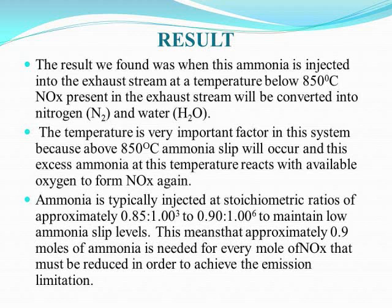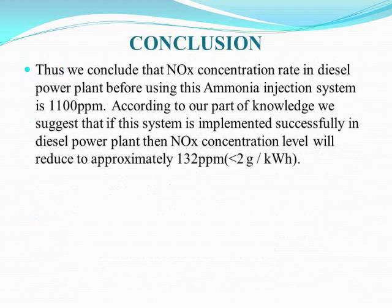The results show that if ammonia is injected below 850°F, ammonia slip can be reduced, and the injected ammonia will react with NOx in the exhaust gas to form nitrogen and water, which are harmless for the atmosphere. The important parameter is that ammonia should be injected at a stoichiometric ratio of 0.85 to 0.9 — with 0.86 being the optimal level to minimize ammonia slip.